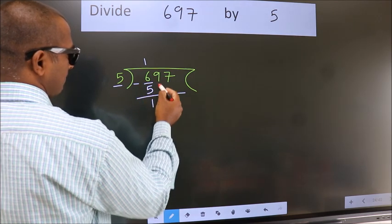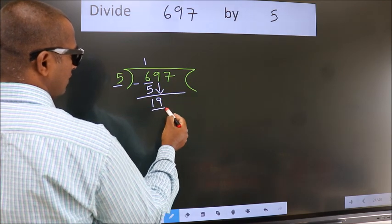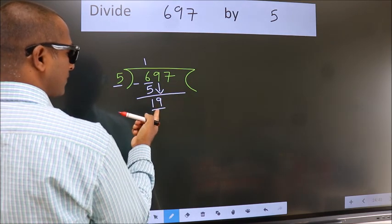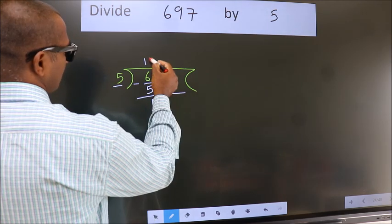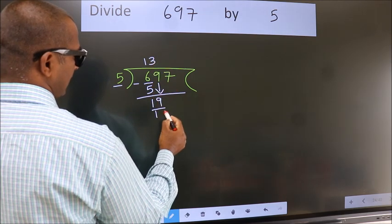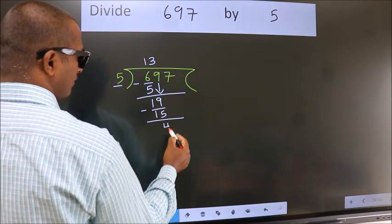After this, bring down the beside number. So 9 down, which gives us 19. A number close to 19 in the 5 table is 5 three times, which is 15. Now we should subtract. We get 4.